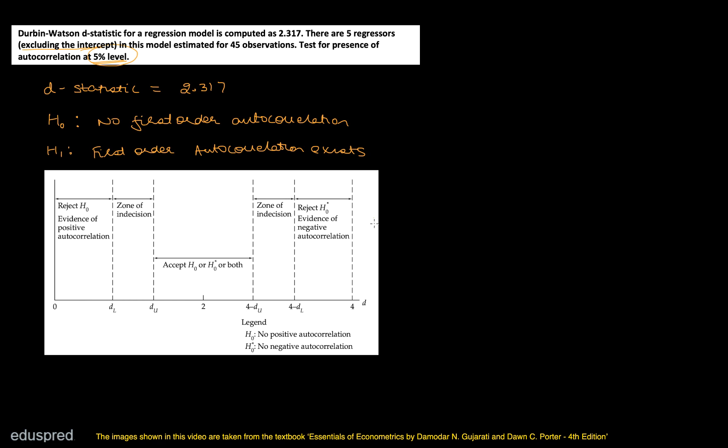So the decision criteria that we have in this case is this. I've taken this image from chapter number 10 of your textbook. As you can see, we have DL, DU, 4 minus DU, and 4 minus DL. This DL and DU that you see over here, these are the critical values of Durbin-Watson D statistic.